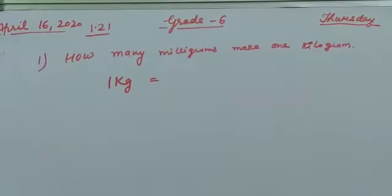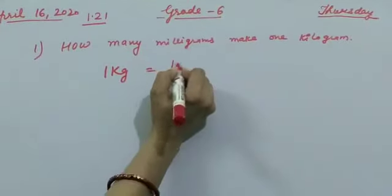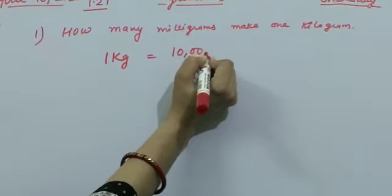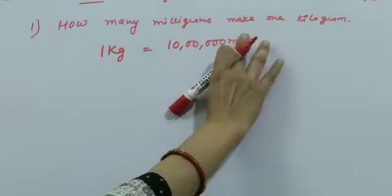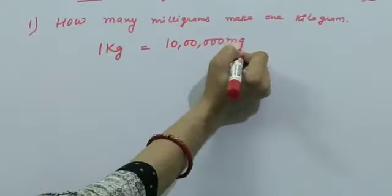How many steps are there? There are six steps. That means ten lakhs. Ten lakhs milligrams.